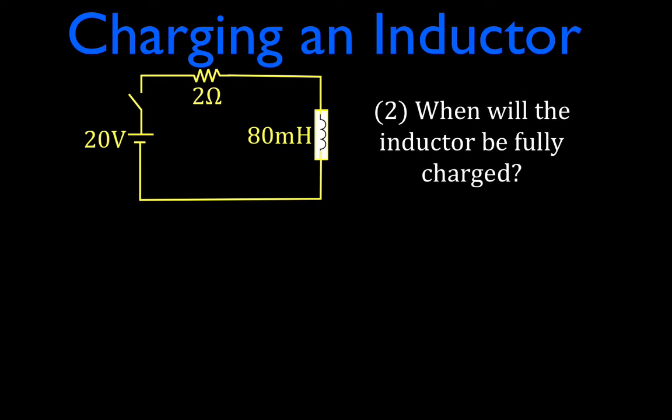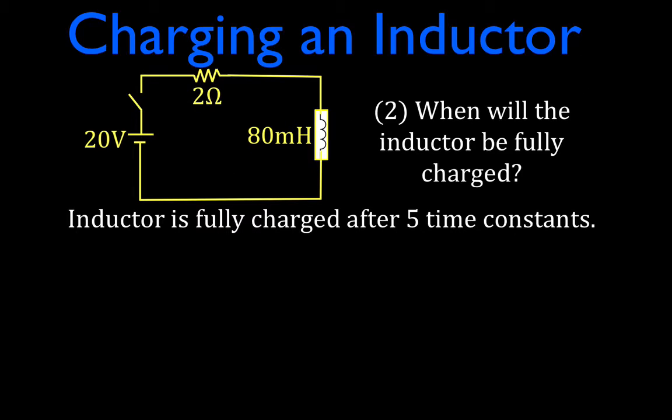Now number two, we want to know when will the inductor be fully charged. Well, we assume that the inductor will be fully charged just like we did with capacitors and RC circuits after five time constants. So we've got to figure out what the time constant is. First, tau is the symbol we use for time constants. For an RL circuit, we simply calculate the time constant as L, the inductance of the inductor, divided by R, the resistance of the resistor.